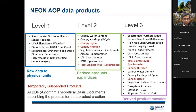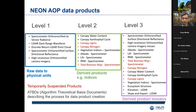Of the 180 data products NEON provides, 29 are developed by the AOP team, broken down into three levels: level 1, 2, and 3. Raw data collected by sensors is level 0, which is not released to the public. Level 0 is processed to create level 1, then level 2, then level 3, serially. As you go from level 1 to level 3, dataset sizes typically decrease. For this tutorial, we'll look at the level 1 discrete return LiDAR point cloud and the level 3 Elevation LiDAR product, which gives ground elevations in raster format at one-meter spatial resolution.